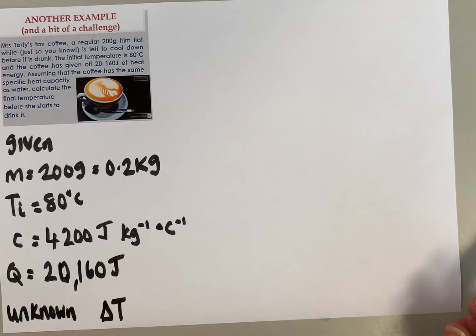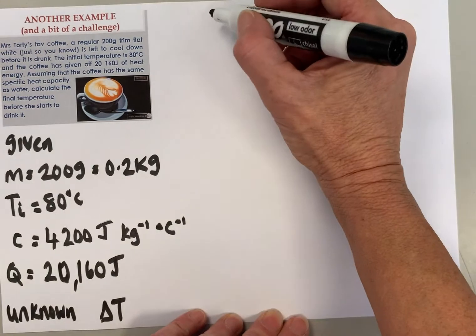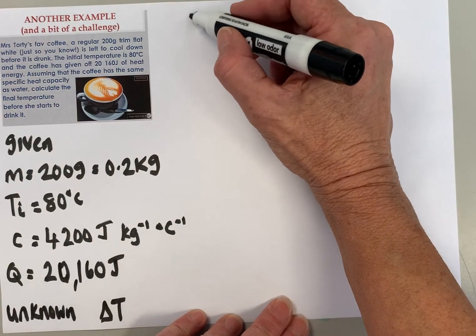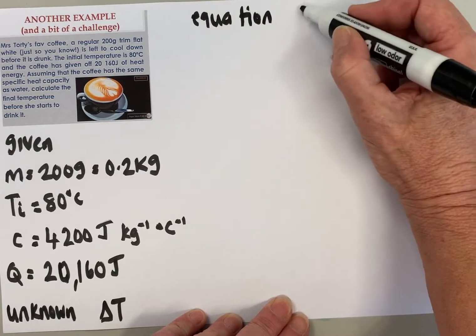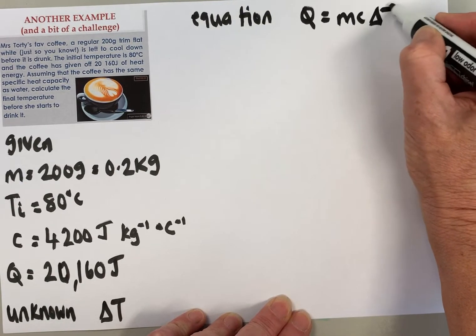Next, we've got Given, Unknown, now we need an Equation. You don't need to learn this equation, you're given it in the exam, and it's Q = mcΔT.